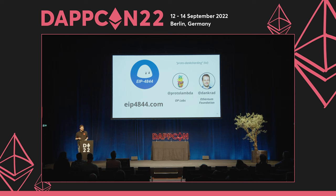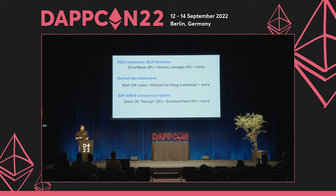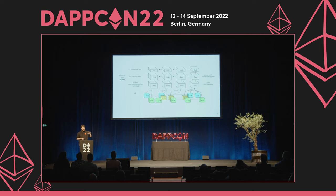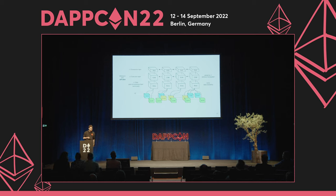EIP 4844 is the first step to dank sharding — the meme is proto-dank sharding. Shout out to many other people working on the cryptography, DevNet development, and specifications. Shout out to the whole crowd backing this EIP. We have this combination of layer 1 EVM and this new thing — layer 1 availability. We're adding this to the consensus layer of layer 1, and now we can attach many more EVMs, many more capacity from layer 2 to layer 1, with better data availability.